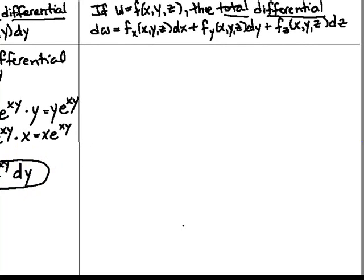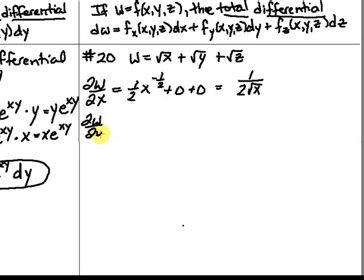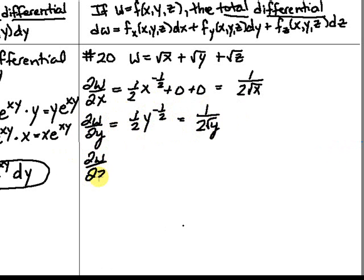Now let's look at number 20, the same instructions but with a three-variable function: w equals the square root of x plus the square root of y plus the square root of z. We have three partials to find. The partial of w with respect to x is one-half x to the negative one-half, or 1 over 2√x. The partial with respect to y is 1 over 2√y. The partial with respect to z is 1 over 2√z.